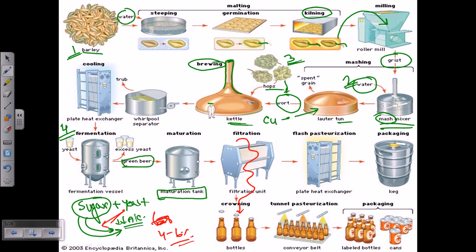Once the beer is filtered, we bottle it into different bottles. Bottling is done after filtration. After bottling comes a kind of tunnel pasteurization.